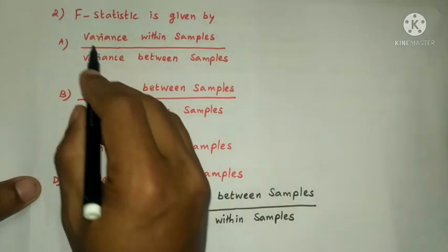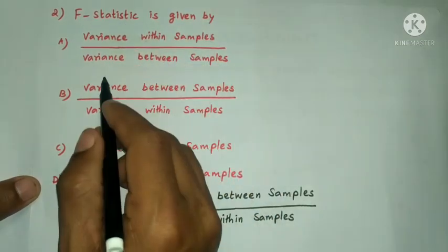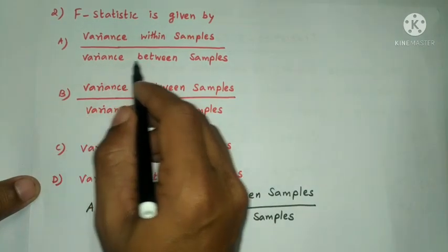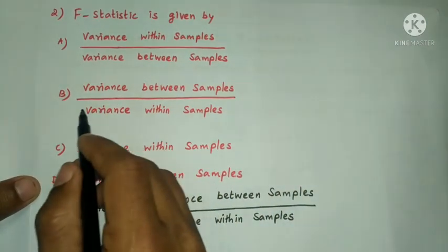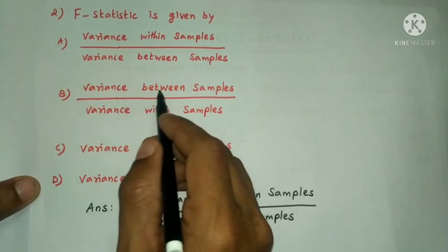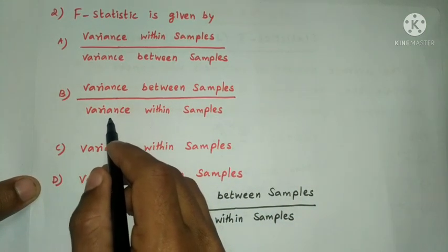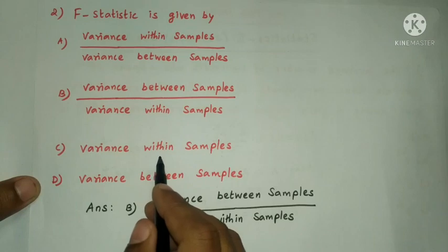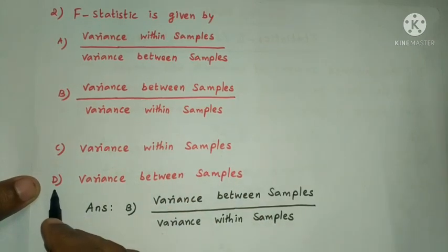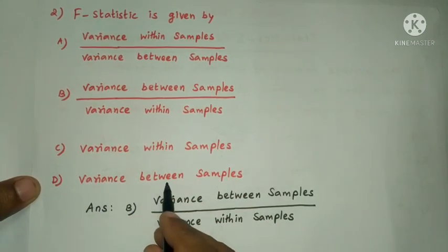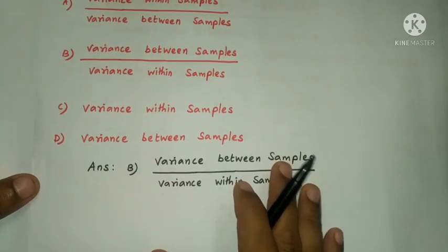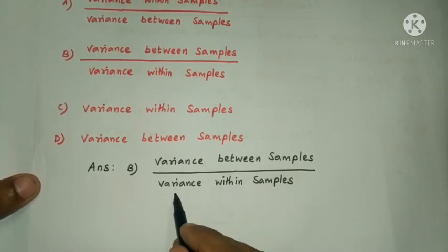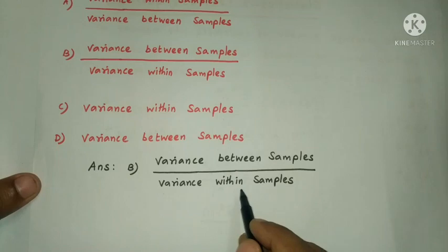Next question: the F statistic is given by — Option A: variance within samples by variance between samples. Option B: variance between samples by variance within samples. Option C: variance within samples. Option D: variance between samples. The answer is option B: variance between samples divided by variance within samples.